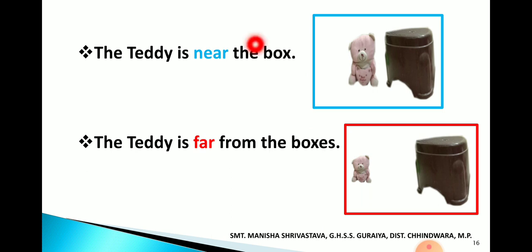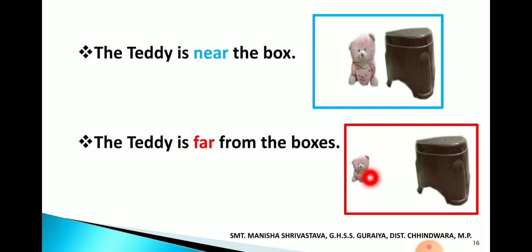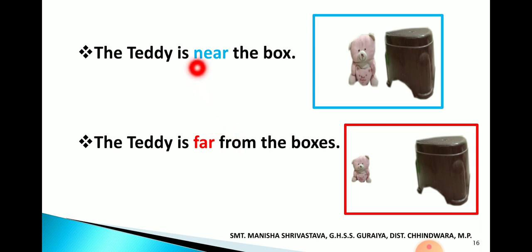'The teddy is near the box' — box और teddy की दूरी बहुत कम है, near याने पास. 'The teddy is far from the box' — teddy और box की distance ज्यादा है. Far और near एक दूसरे के opposite words हैं और ये physical distance को बताते हैं — near यानि physical nearness और far यानि physical दूरी बताता है.